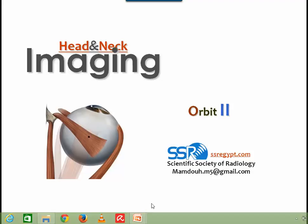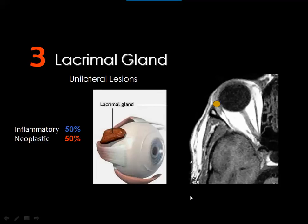Dear colleagues, this is the second part of the lecture on Orbital Imaging. From the first part we dealt with the anatomy and the examination techniques. We divided the orbit into five or six anatomic zones, starting with evaluation of the globe, then the optic nerve. Now we are going to complete the rest of the orbital structures, starting with evaluation of the lacrimal gland.